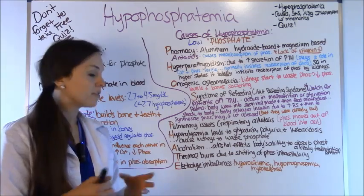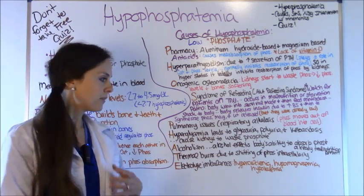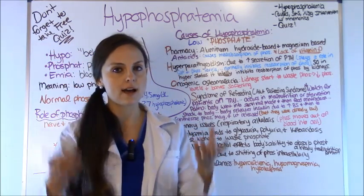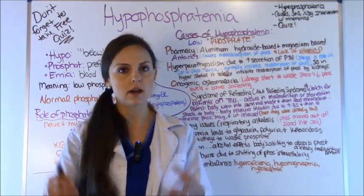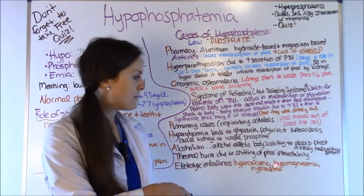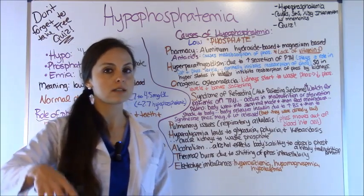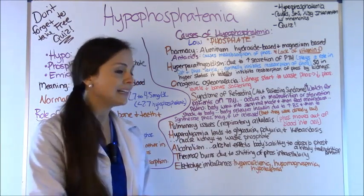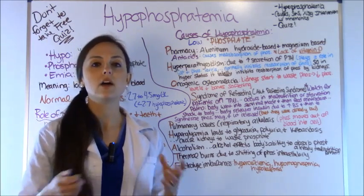E is for electrolyte imbalances. Remember how high calcium leads to low phosphate — other electrolyte imbalances can also cause low phosphate levels, such as hypercalcemia, hypomagnesemia (low magnesium levels), and hypokalemia (low potassium).